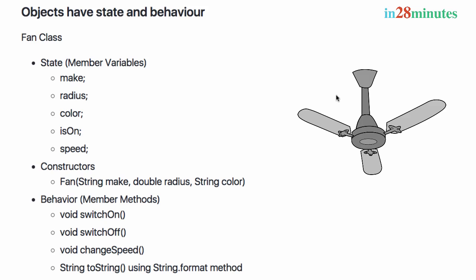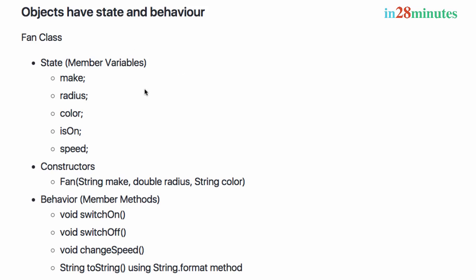For this fan class, think about what elements represent the state of a specific fan object, how you want to allow construction, and what behavior you would allow. The state I'm looking at is: make (the manufacturer), radius (the wing radius), color, isOn (whether it's on or off), and speed. If it's on, what is the speed? Those are the different things important to represent the state — though you might think of other attributes as well.